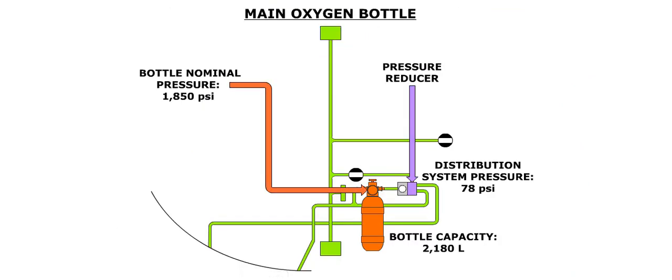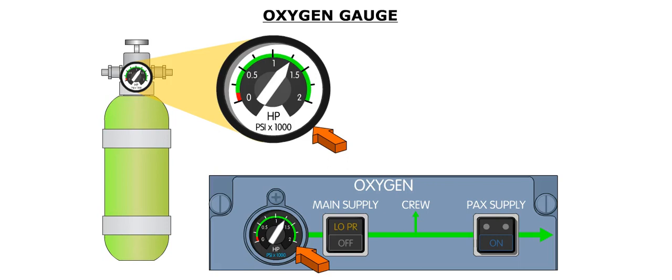The capacity of the high-pressure oxygen bottle is 2,180 liters. The nominal pressure of the bottle is 1,850 psi. A reducer downstream of the bottle reduces the oxygen pressure to 78 psi. The pressure of the oxygen bottle is indicated on a gauge located on the top of the bottle. Another gauge on the oxygen panel, located in the upper right area of the overhead panel, indicates the bottle's pressure as well.